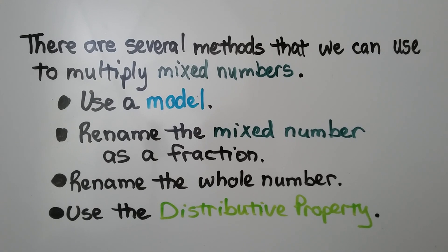There are several methods we can use to multiply mixed numbers: we can use a model, we can rename the mixed number as a fraction, we can rename the whole number, or we can use the distributive property. Let's see how to do these.